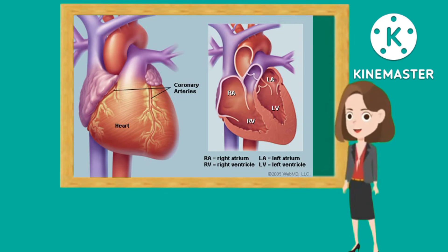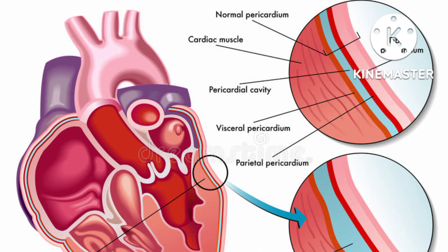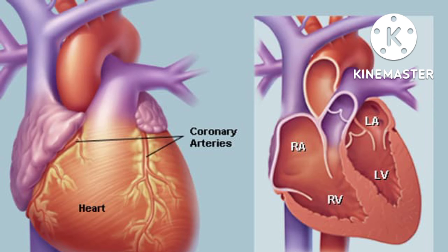The coronary arteries run along the surface of the heart and provide oxygen-rich blood to the heart muscle. A web of nerve tissue also runs through the heart, conducting the complex signals that govern contraction and relaxation. Surrounding the heart is a sac called the pericardium.